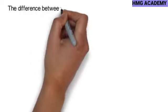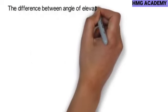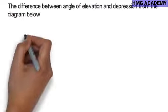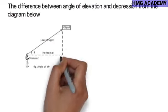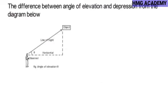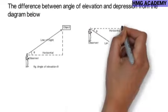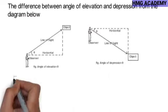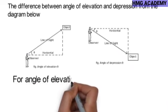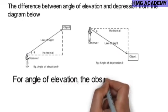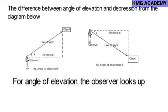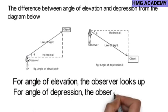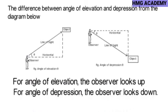The difference between angle of elevation and depression: from the diagram, for angle of elevation the observer looks up, and for angle of depression the observer looks down to see the object.